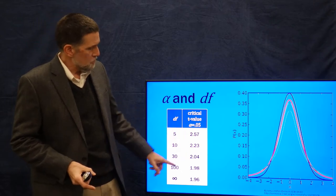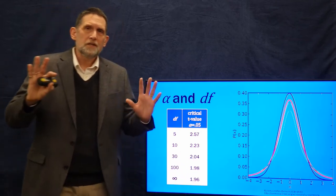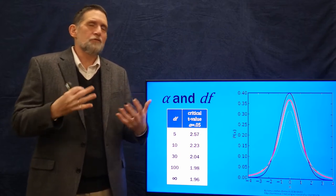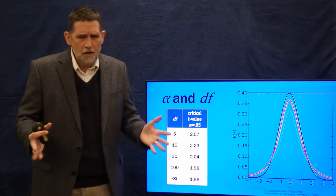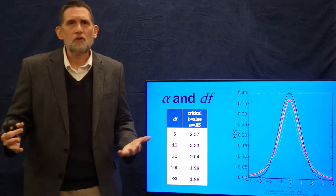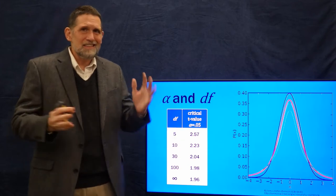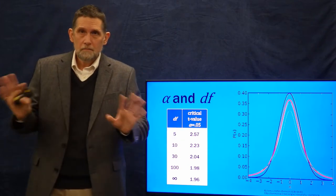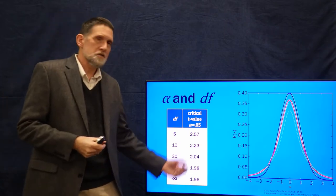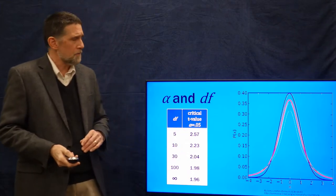Notice that by the time you get to about 30 cases, it pretty much starts leveling off — that's why I've said that a sample size of 30 is adequate to do statistics. In anthropological research, that's actually a pretty good sample size. It's hard to get a whole lot bigger than that, especially in cross-cultural research. If you're doing archaeology and you can get 30 cases, you can start doing some reasonable statistical analysis.